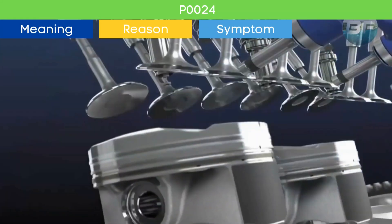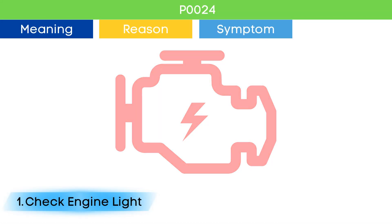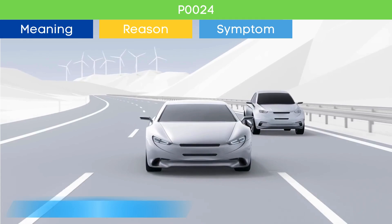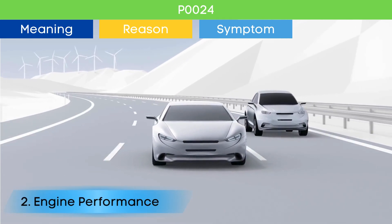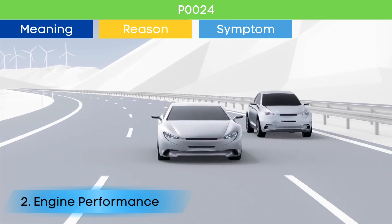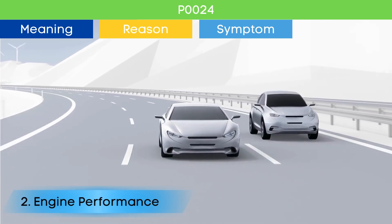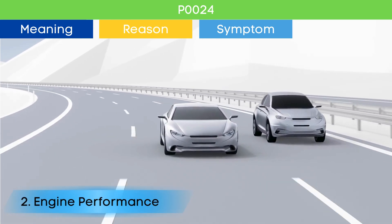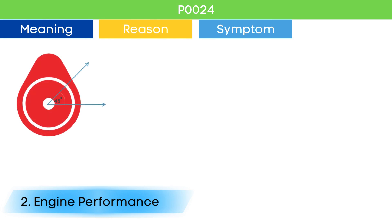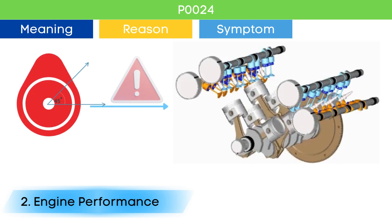Symptom number one: check engine light. The check engine light comes on if there are any active trouble codes related to EMS. Symptom number two: poor engine performance. Problems in the cam position actuator circuit can lead to incorrect cylinder valves opening and closing.